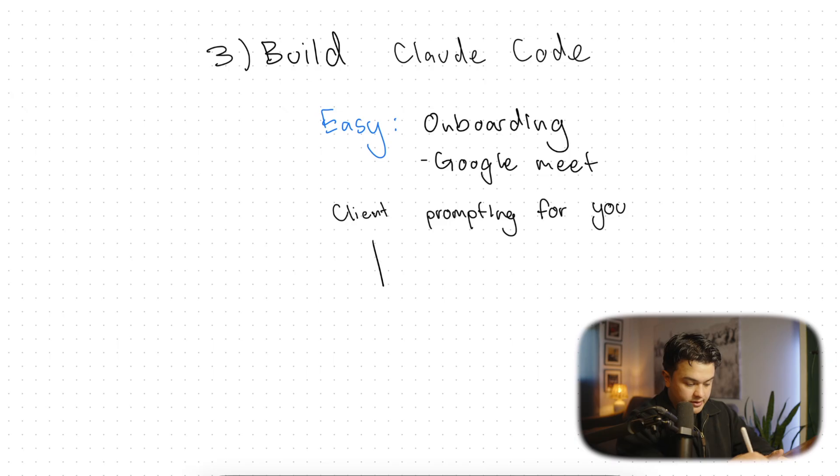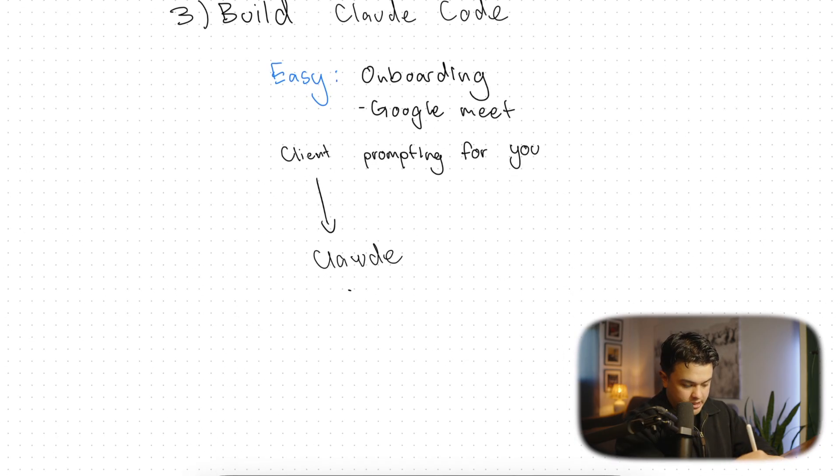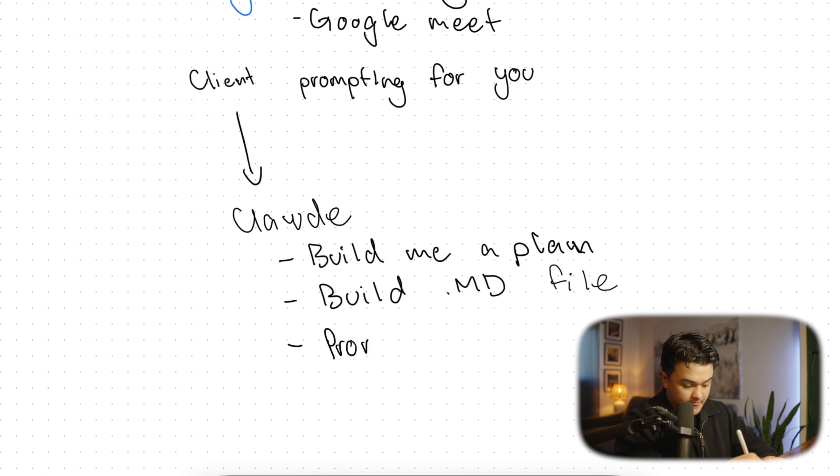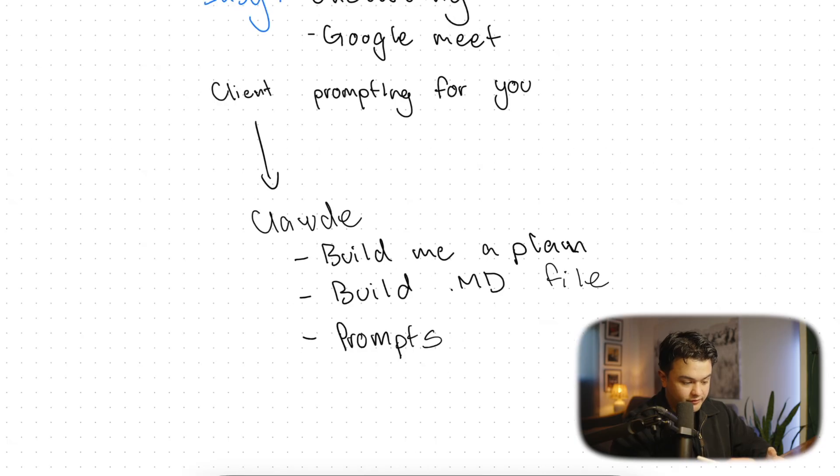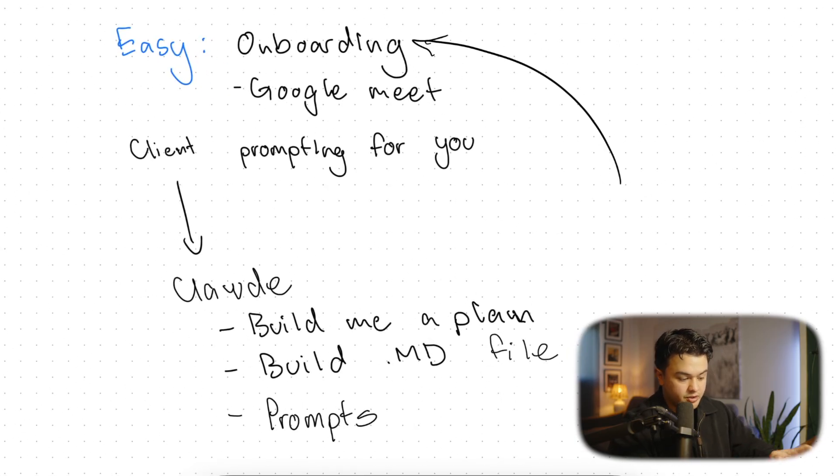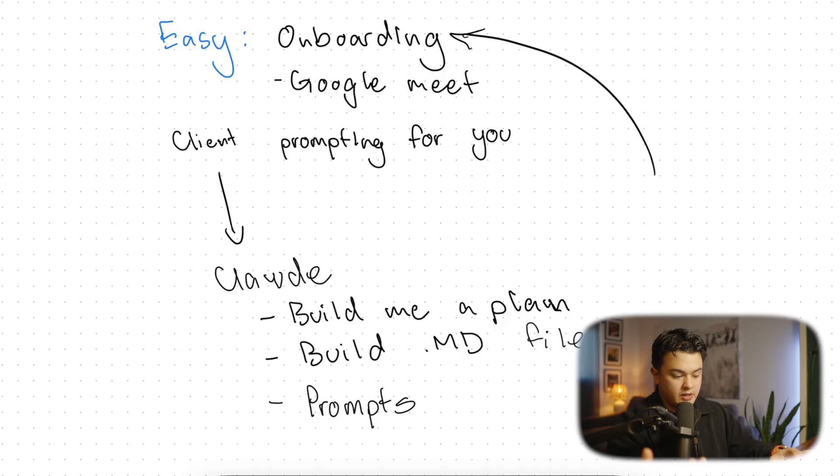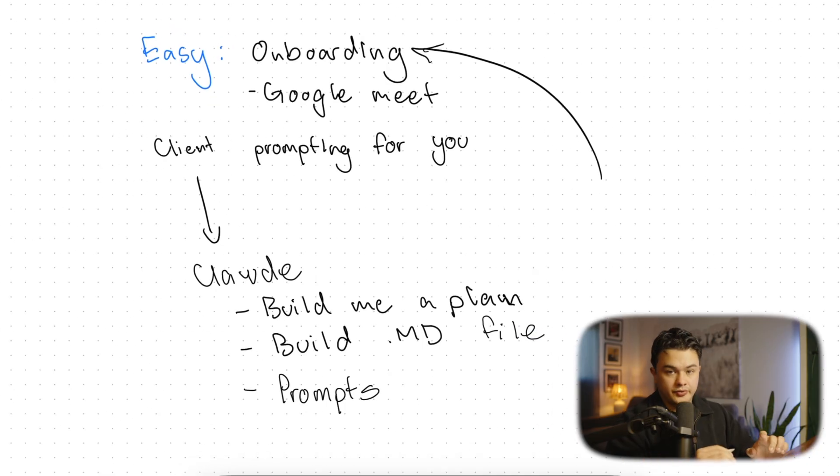You're going to collect all this information and you're going to put it into Claude, just the Claude desktop app. You're going to say, build me a plan. Plan out this entire application based on the client's transcription and on the transcription of this meeting. Build an MD file, a Claude MD file, so Claude can actually follow this step by step when we actually start building and prompts. You have all that gold from the client call. This is crucial.